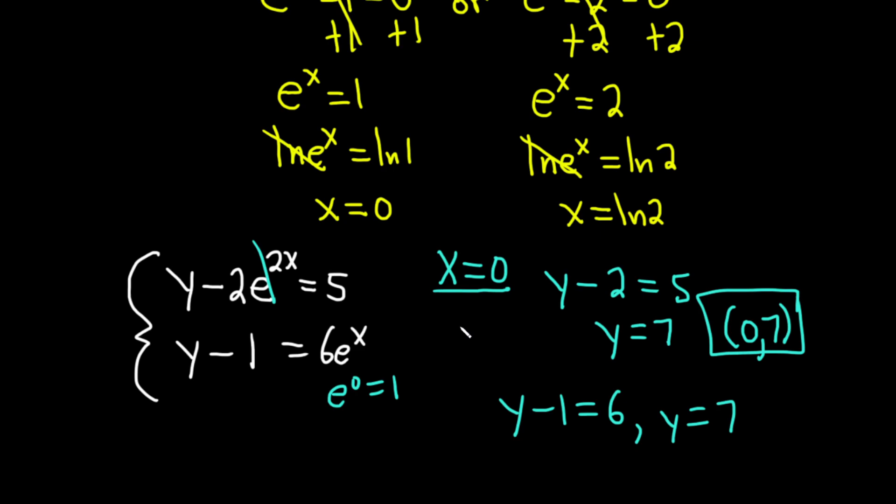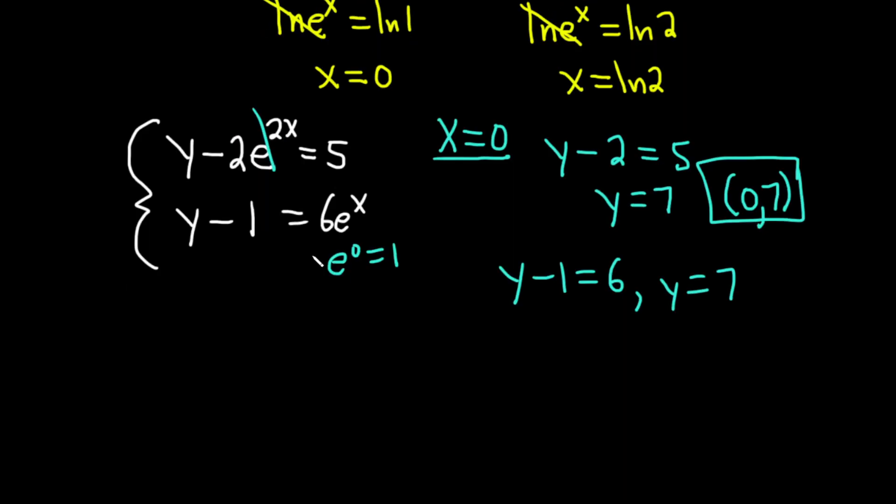This is the point in the xy plane where these two graphs intersect. They're not lines. These are exponential functions. So 0, 7 is a point where these two exponential functions will intersect. Let's find the other point of intersection by focusing on this value of x. So x equals the natural log of 2.